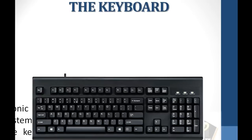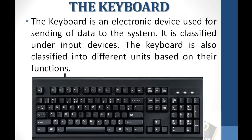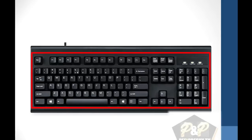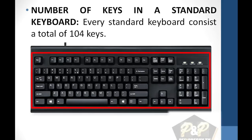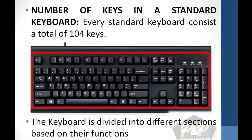So what is the keyboard? The keyboard is an electronic device used for sending data to the system. It is classified under input devices. The keyboard is also classified into different units based on their functions. Every standard keyboard consists of a total of 104 keys. What you see on the screen is a clear picture of a standard keyboard.